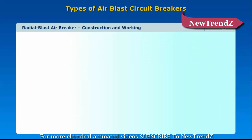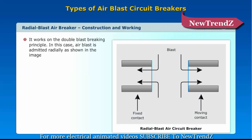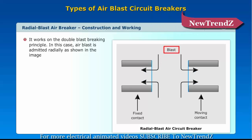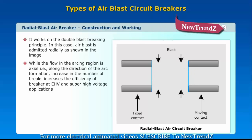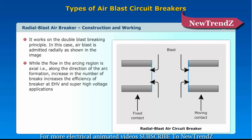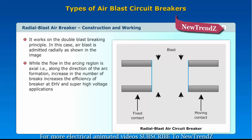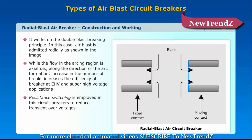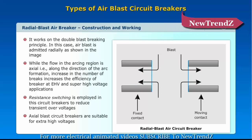The radial blast circuit breaker works on the double blast breaking principle. Air blast is admitted radially, while the flow in the arcing region is axial, that is, along the direction of arc formation. An increase in the number of breaks increases the efficiency of the breaker. At EHV and super high voltage applications, resistance switching is employed to reduce transient over-voltages. Axial blast circuit breakers are suitable for extra high voltages.